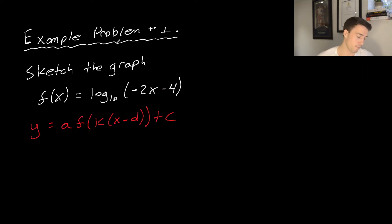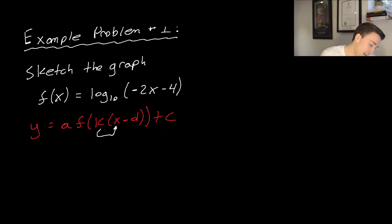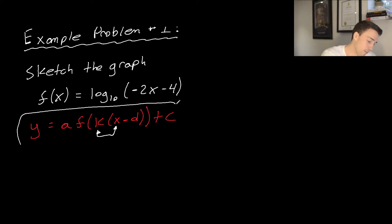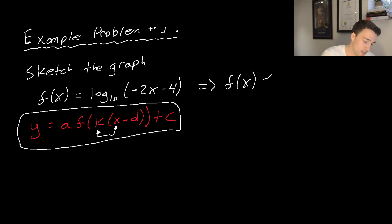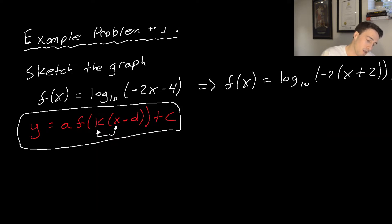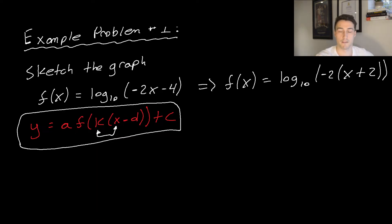Moving on to our example problem. Here we're asked to sketch the graph of log base 10 of (−2x − 4). I mentioned earlier that k and x must be kept separate — we have to have the function always in the proper form. So the first thing to check is whether this is in that form. We're going to factor out the negative 2, giving log base 10 of −2(x + 2), and that meets the form we're looking for.